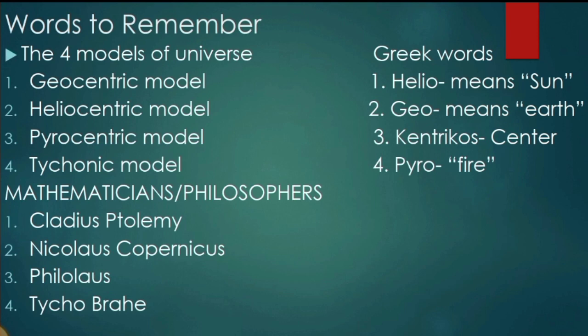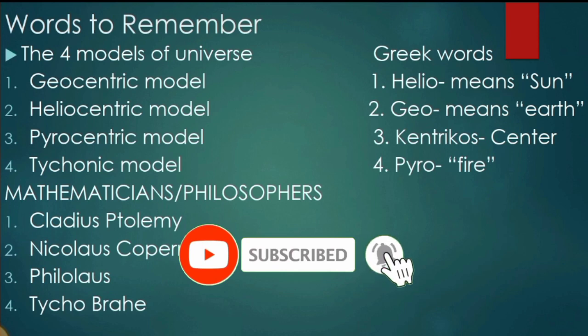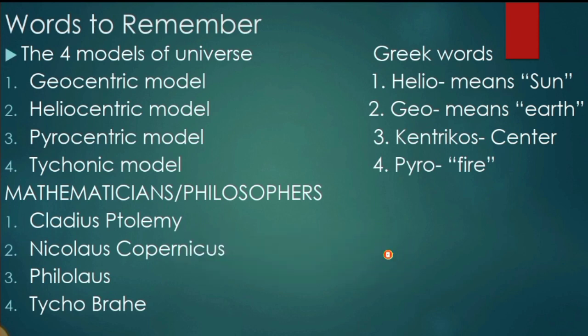The four models are: geocentric model, heliocentric model, pyrocentric model, and tyconic model. Their key figures are: Claudius Ptolemy, Nicolaus Copernicus, Philolaus, and Tycho Brahe. Key Greek words: 'helios' means sun, 'geo' means earth, 'centric' pertaining to a center, and 'pyro' means fire. I suggest you do additional research and watch other videos related to this topic. If you learned something, please like, share, and subscribe. You can also comment below to add information or corrections. Thank you, and goodbye!